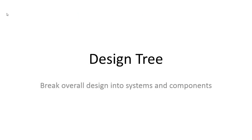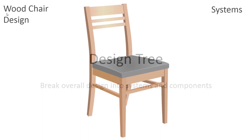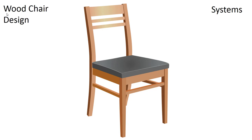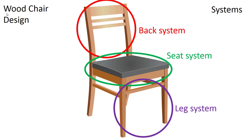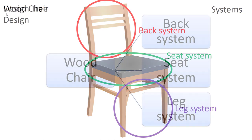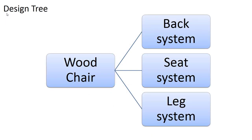Let's start out with the design tree. At this point we're going to break your overall design into systems and components. For an example, let's say we're going to start out with a wood chair design — a concept-level wood chair that you are planning to detail design moving forward. We're going to use the FMEA process to ensure that detailed design is thorough. The first thing you want to do is break your overall design into systems: for the chair, a back system, a seat system, and a leg system.